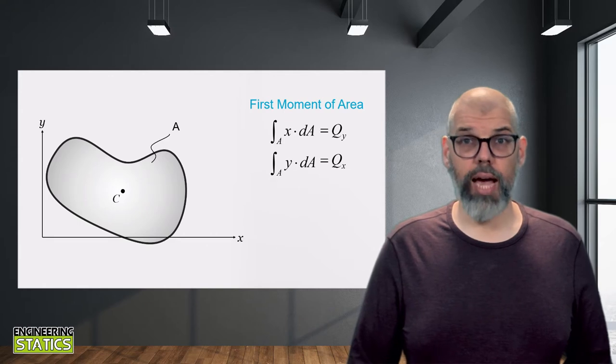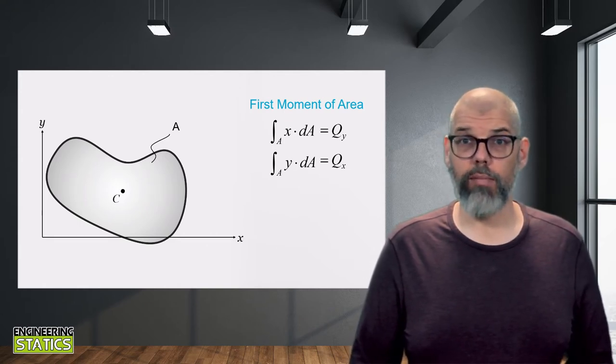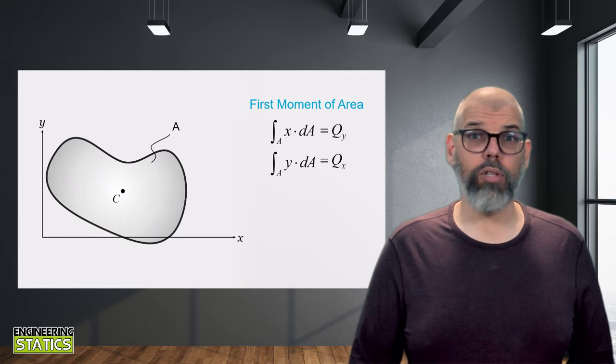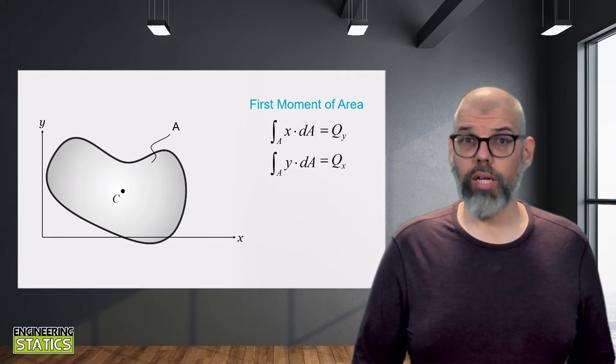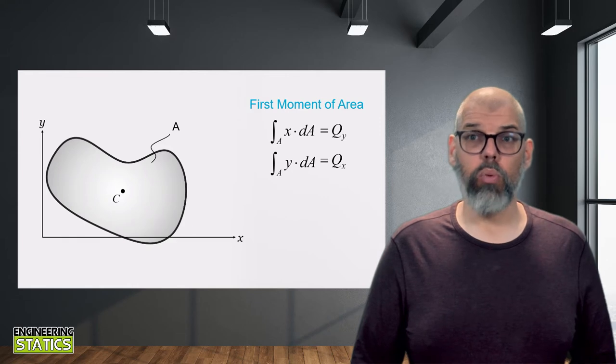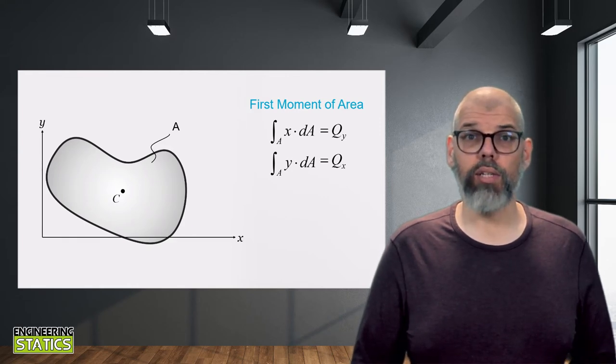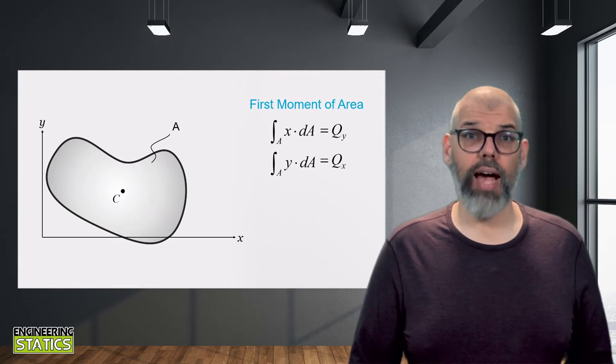First, let's briefly recap the two area moments of inertia we have encountered so far and what they mean. We encountered the first moment of area, or the integrals of x times dA and the integral of y times dA, when locating the centroid of a geometric shape. We often denote these moments of inertia as qy and qx, where the subscript refers to the axis which the moment of area is calculated about.